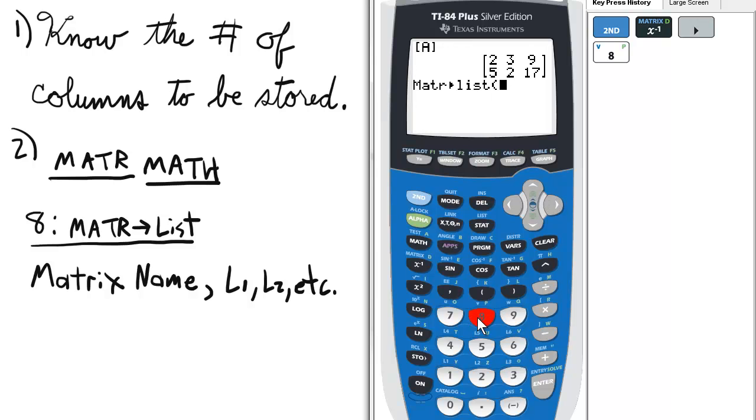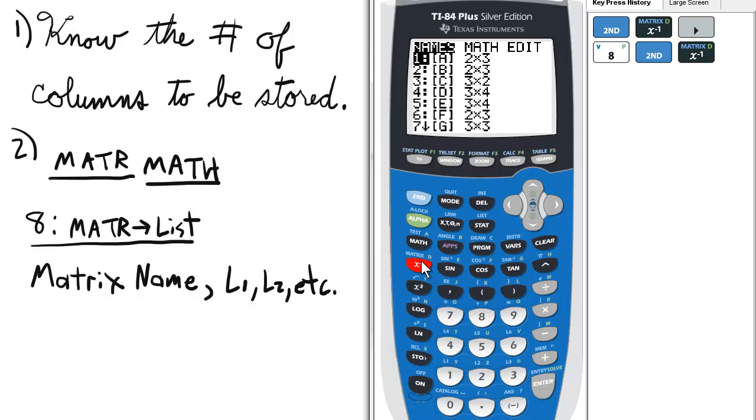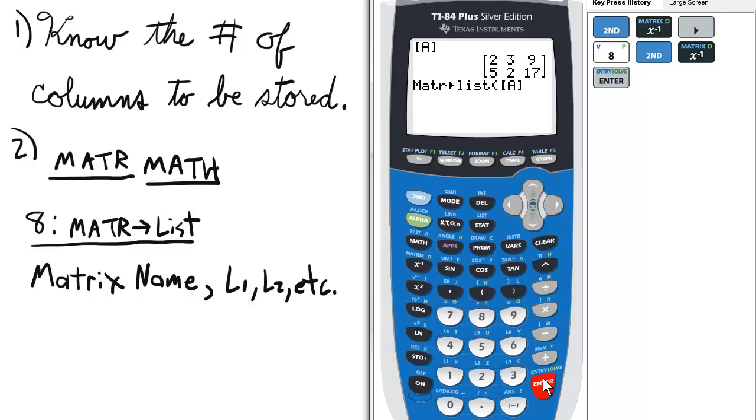Now we need to first name the matrix, so we're going to go back to matrix, and then select A. Then we have to put a bunch of commas, and then we need to put a list for every column that we have.